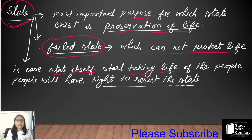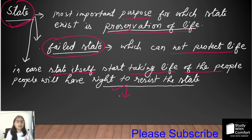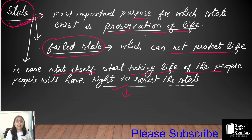If the state starts taking the life of the people, then people have a right — the right to resist the state. The individual has a right to resist, but in which condition? When the state starts taking the life and property of the people. So the purpose of the state is preservation of life, and in this way Hobbes maintains an individualistic behavior.